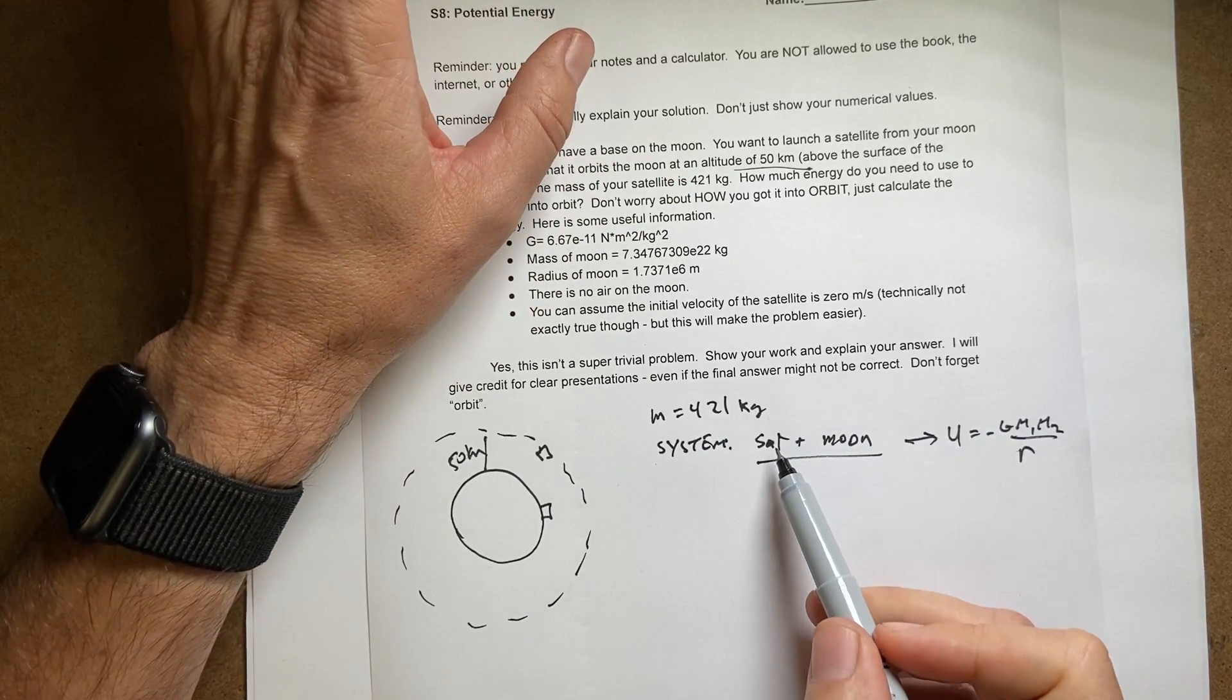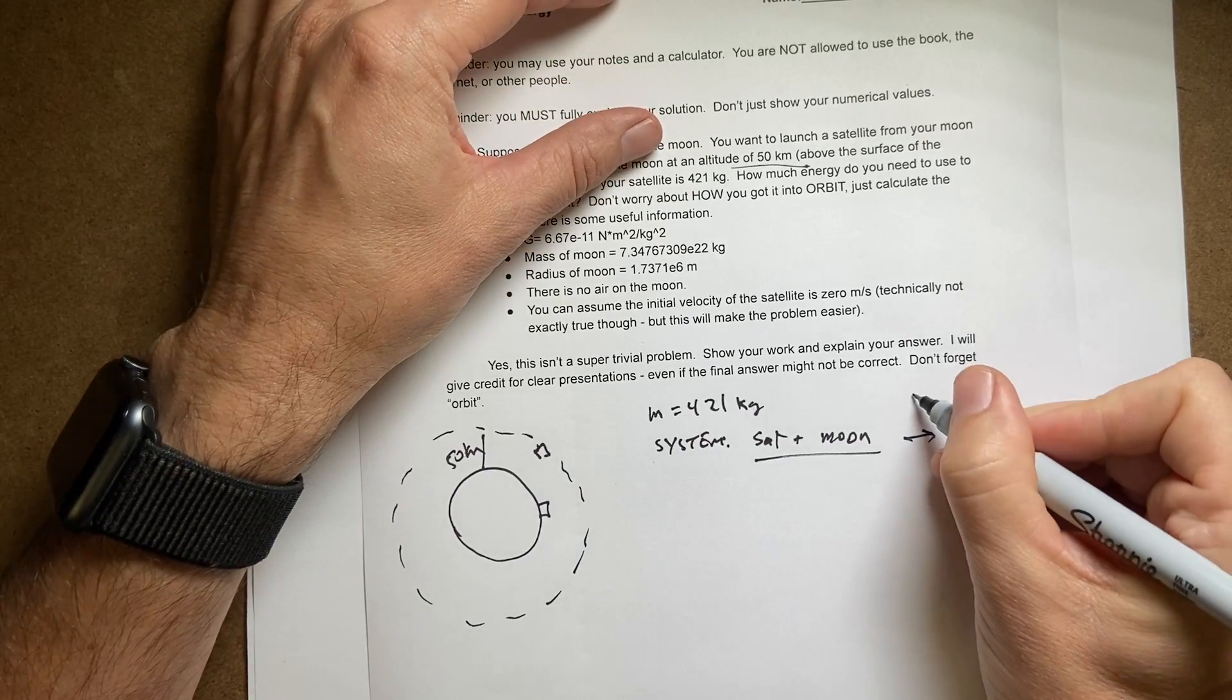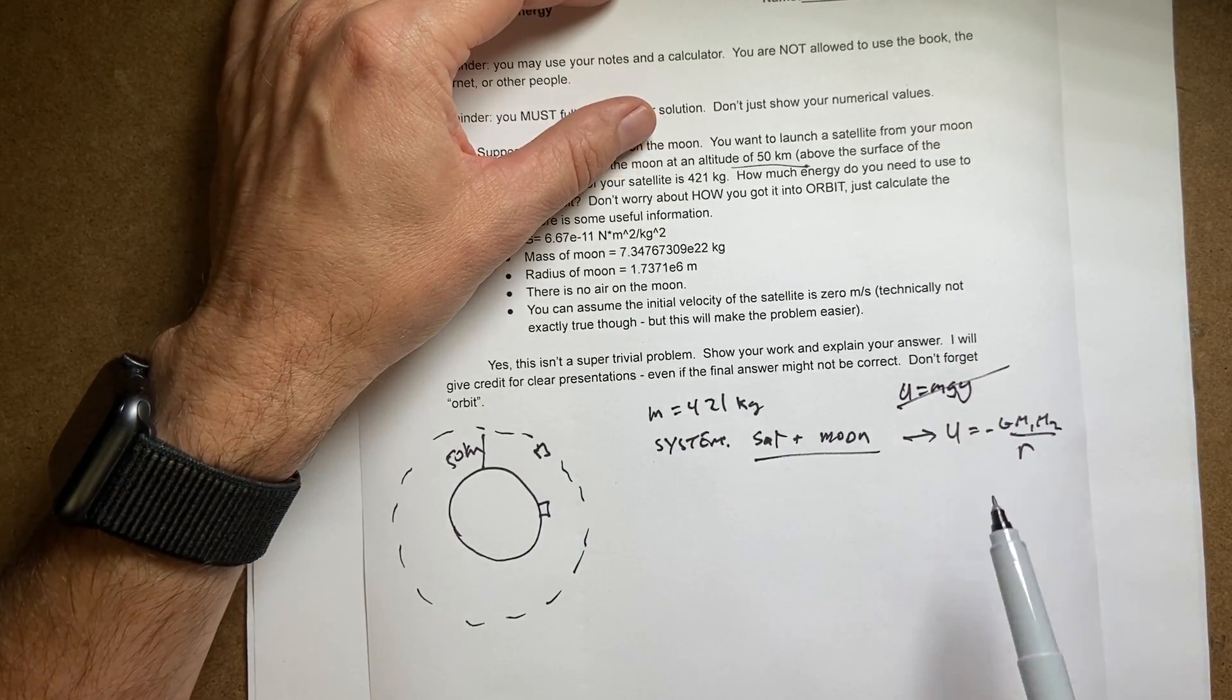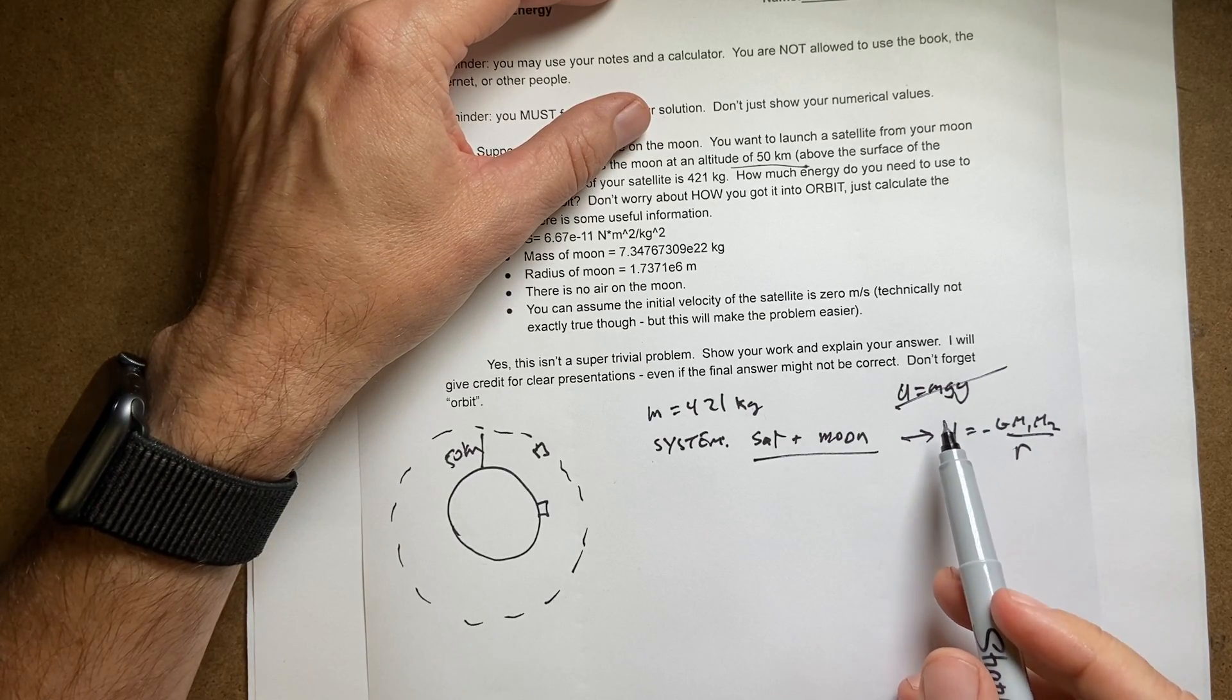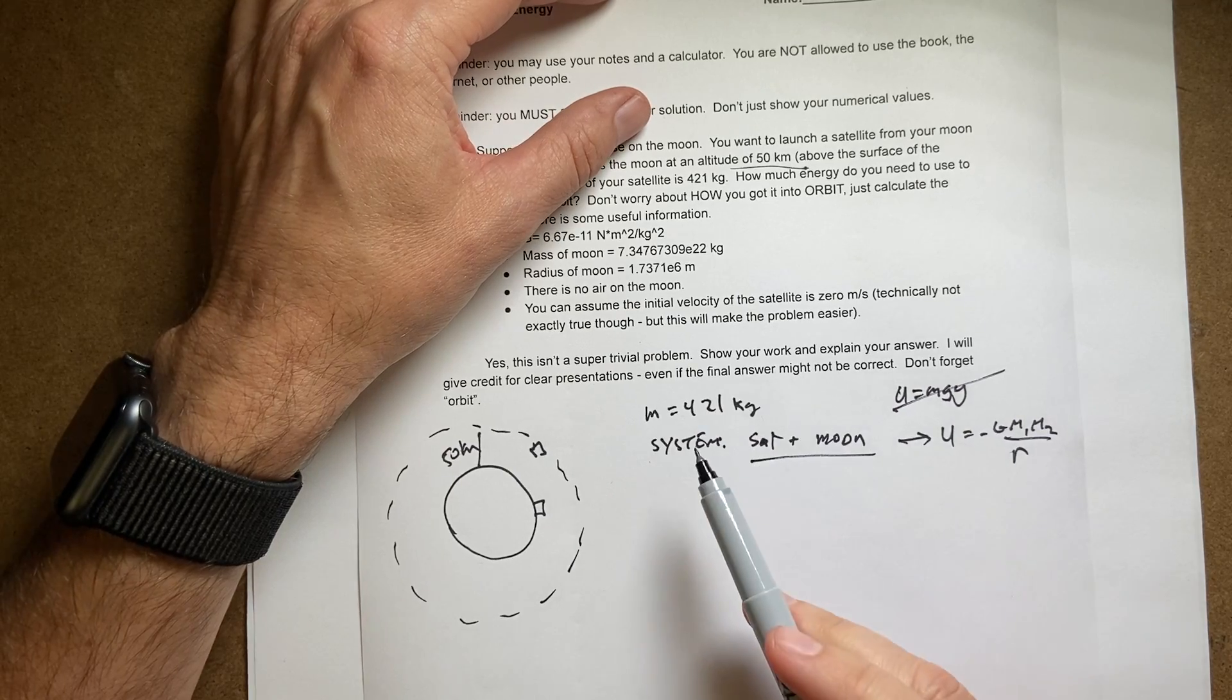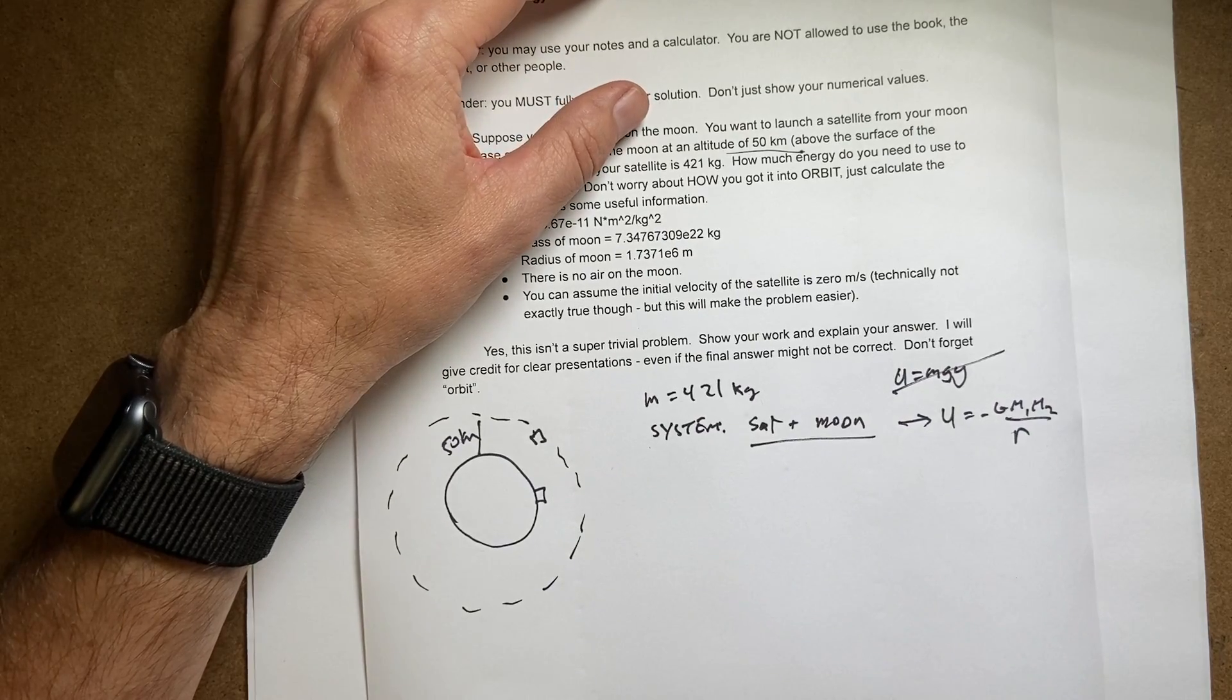If I just have the satellite you can't have gravitational potential energy. And I can't use u equals mg y. I can't do that because that assumes the gravitational force is constant. That only works on the surface of the earth, close to the surface of the earth. You could use it close to the surface of the moon too where the gravitational force is mostly constant. But here it's not.